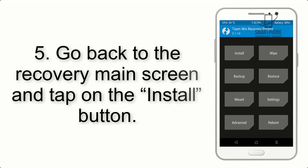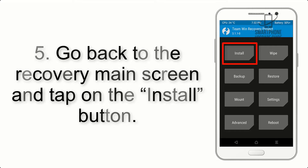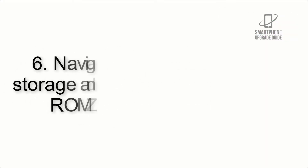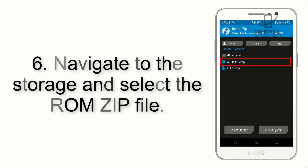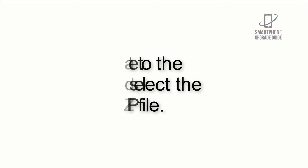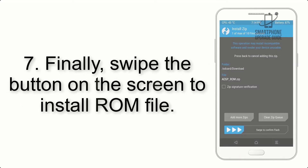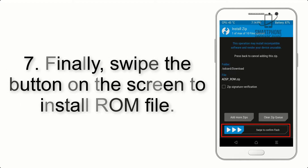Step 4: Swipe the button to wipe the device. Step 5: Go back to the recovery main screen and tap on the Install button. Step 6: Navigate to the storage and select the ROM zip file.